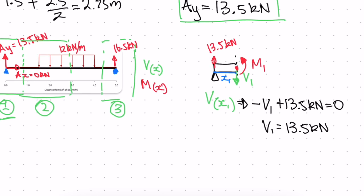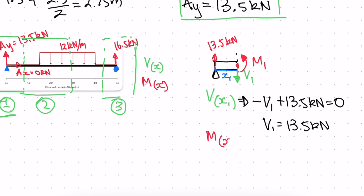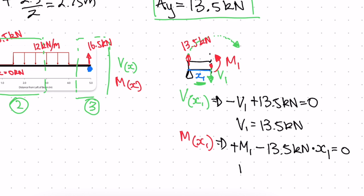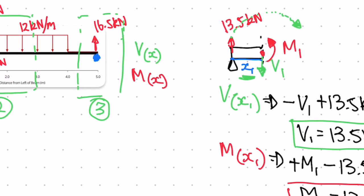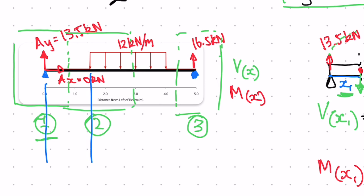Then we write our M1 as a function of X1. We have a positive M1, and our 13.5 kilonewtons acts in the negative direction at a distance of X1. So: positive M1 minus 13.5 kilonewtons times X1 equals zero, giving M1 equals 13.5·X1 kilonewton-meters. We've now found M1 and V1 for any distance X1.